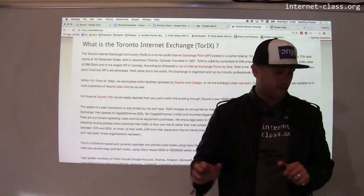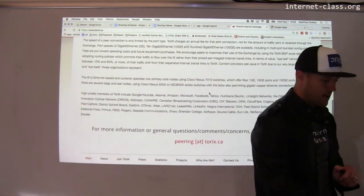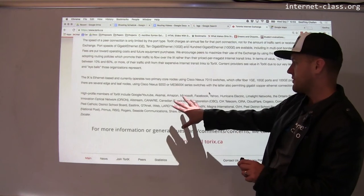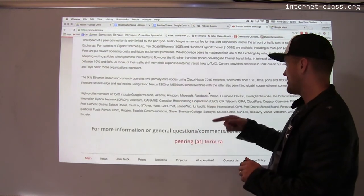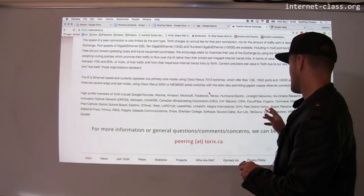This talks about some of the networking facilities they have, and here are some of the members: Google, Akamai, Amazon, Microsoft, Facebook, Yahoo, Hurricane Electric, Landline Networks.